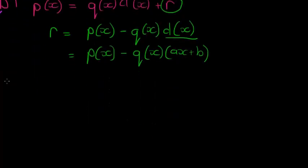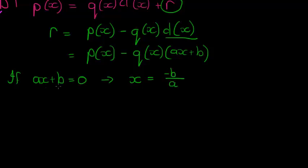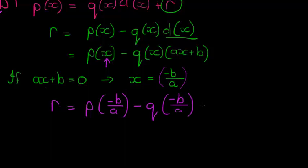Now, if ax plus b is equal to 0, okay, what is x? Well, if we solve for x, we find then x is equal to minus b over a. If we solve for x, that's what we get. Okay, so what's going to happen if I take my remainder and everywhere where there's an x, I replace minus b over a. Okay, so I take p and I substitute minus b over a, minus q. Instead of an x, I put minus b over a. In my remainder, instead of an x, I put a and minus b over a plus b.